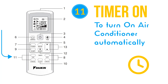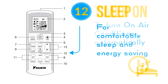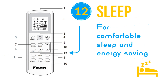Use the sleep function when you need a lower temperature to fall asleep. This function saves energy by increasing temperature slowly. Set a lower temperature in summers using cool mode and activate sleep mode, or set a higher temperature in winters using heat mode and activate sleep mode. To activate sleep mode, press the sleep button. This function is available in cool, heat, and auto modes.